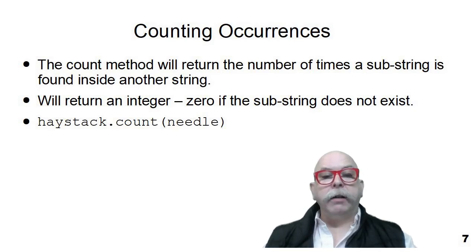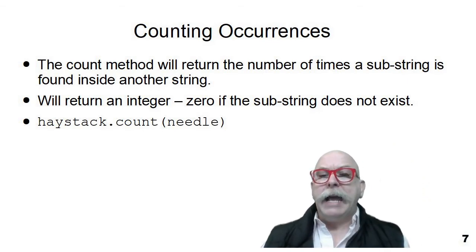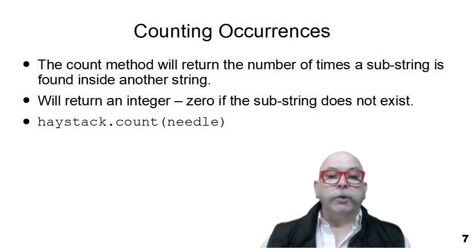The next string method is called count, and it does just what you think it would do. It counts the number of times a substring is found in a larger string. It returns zero if the substring does not exist. You can see the way I wrote it here on this slide: haystack.count(needle). You can think that this is searching for a needle in a haystack, and returns the number of times that substring exists in a larger string.